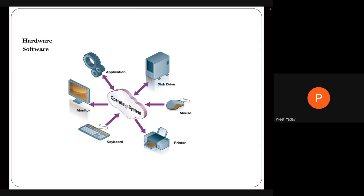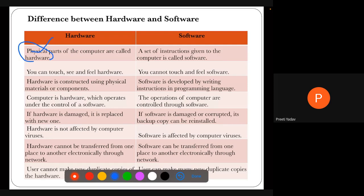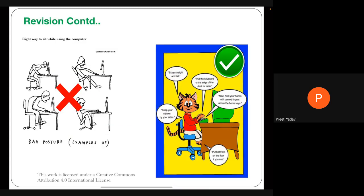Application software includes programs like Microsoft Office, Word, PowerPoint, and media players. The key difference is: if there is a problem with the operating system, the whole system won't work; but if there's a problem with an application, only that particular application will stop working. Physical parts are called hardware; the set of instructions is called software. Hardware can be touched and felt; software cannot.